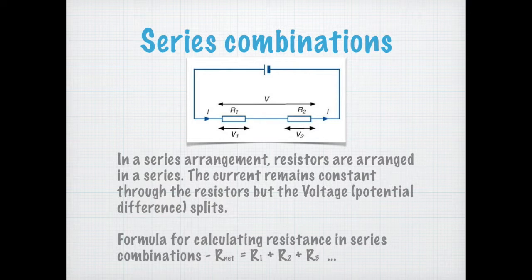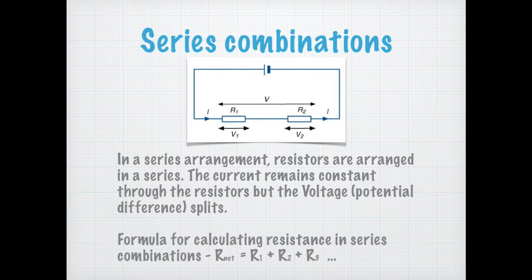The current that flows through both these resistors is the same — the current flowing through the conductors doesn't change in a series combination. But the potential difference across both ends of each conductor is different; the voltage each conductor gets is different.